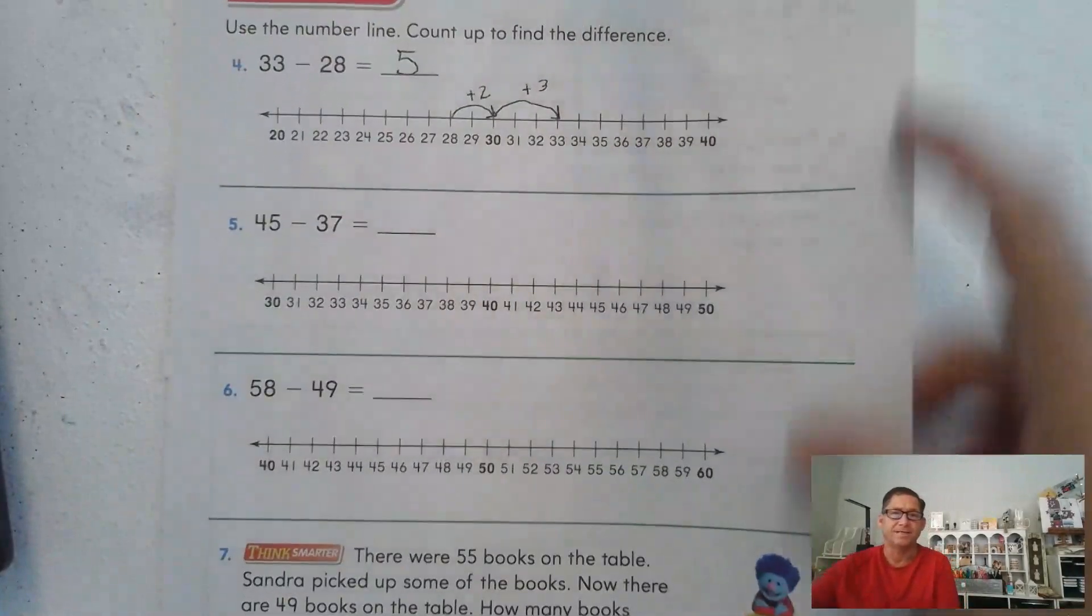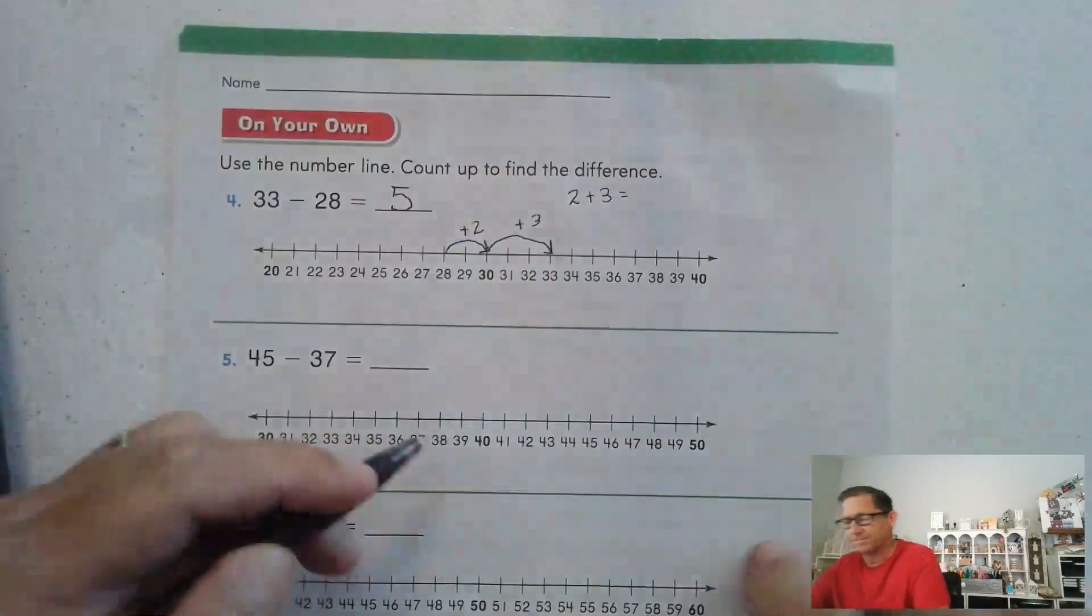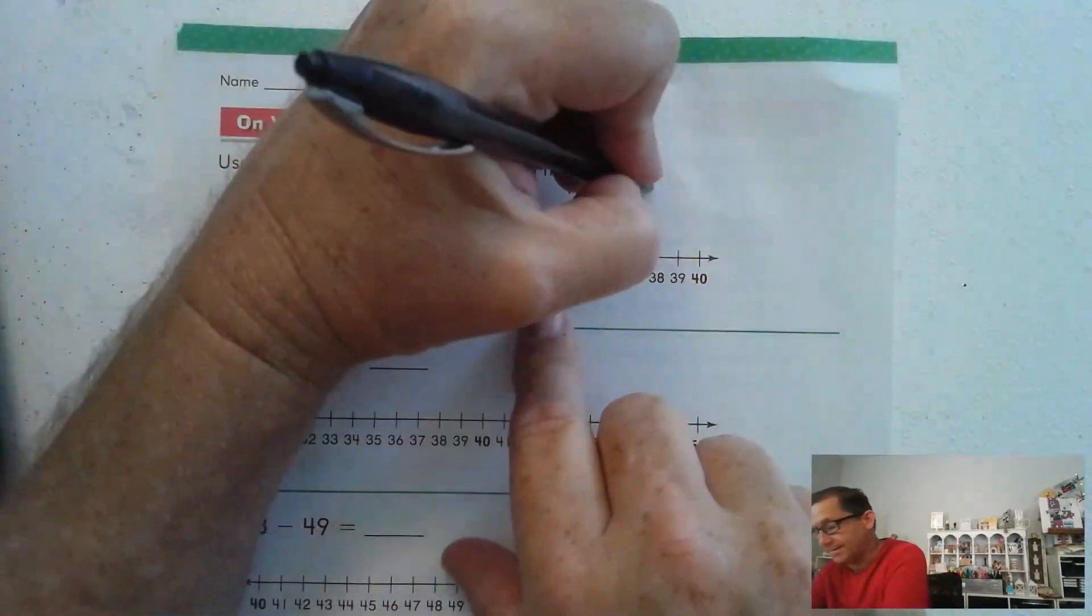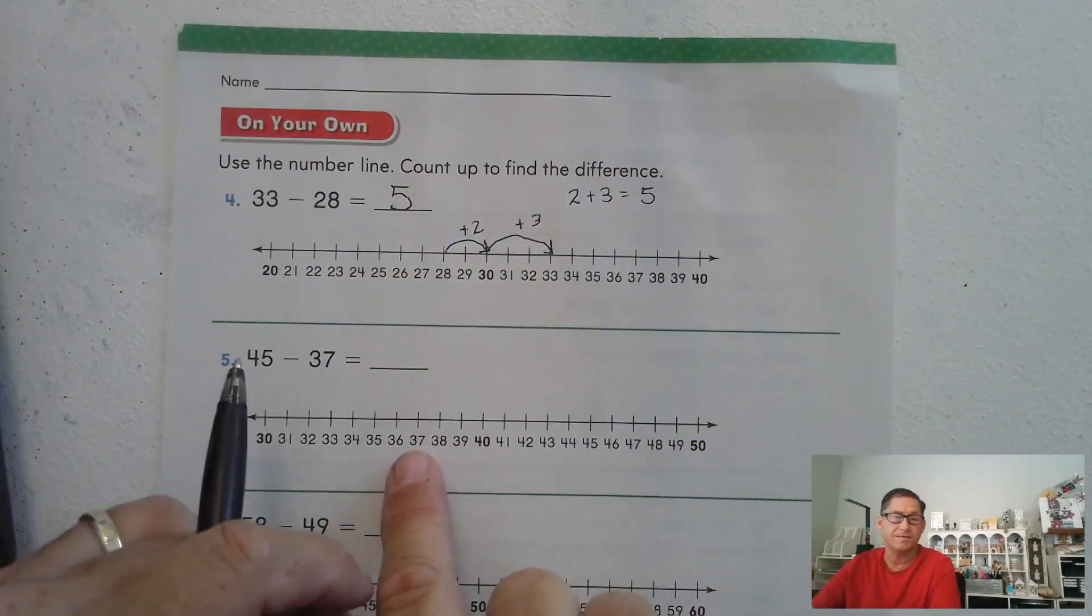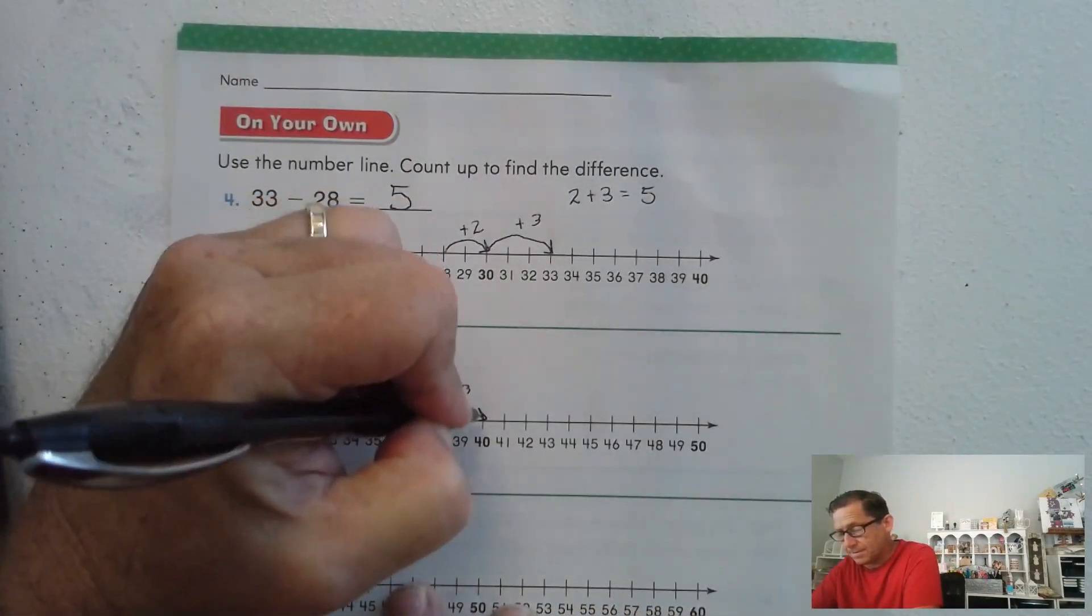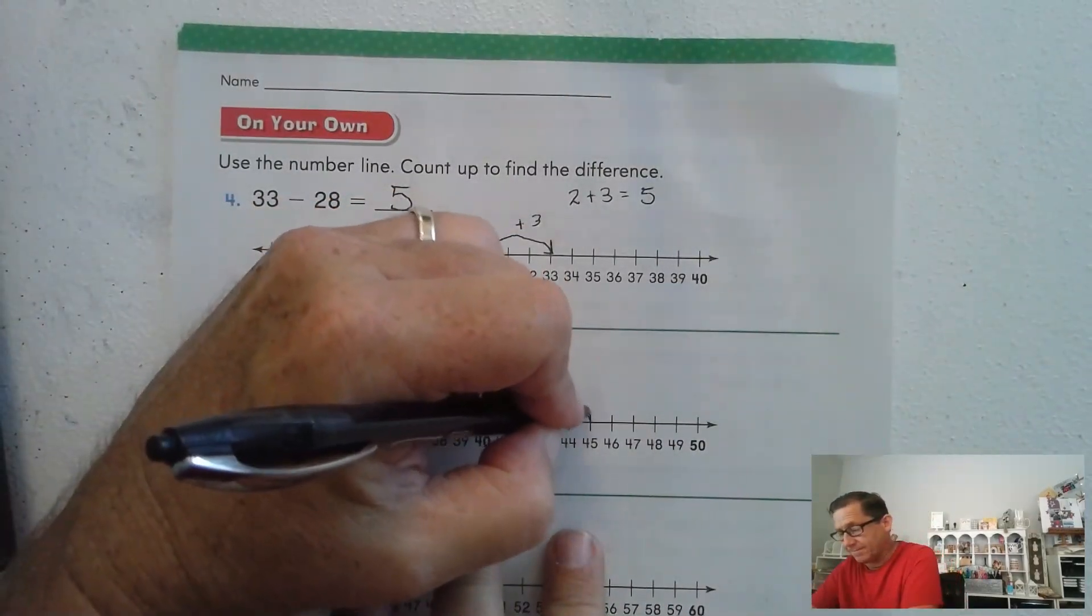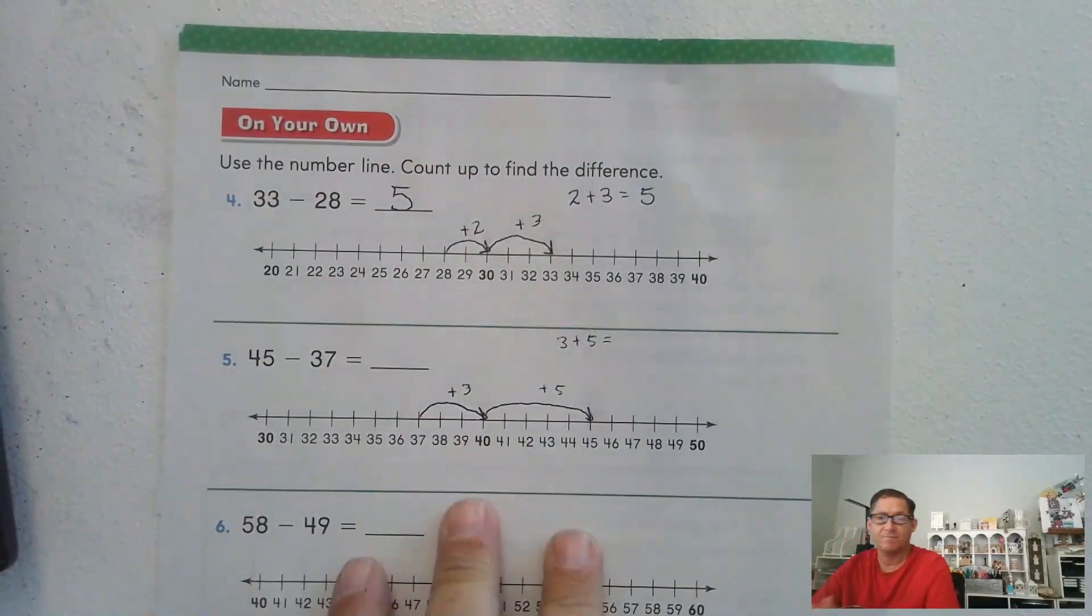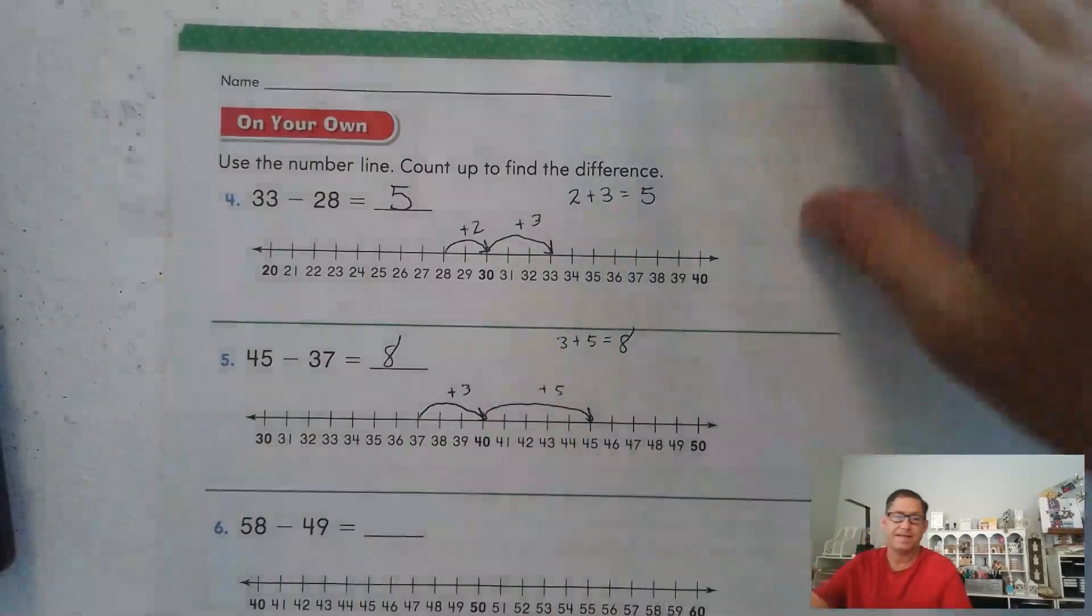45 minus 37. You know what? Let's go ahead and do this. Let's put the jumps that we do. Let's make a math problem out of it: 2 plus 3 is 5. 45 minus 37. So we're going to start at 37 and go to 40. So plus 3. And now 40 to 45. Plus 5. So we jumped 3 and we jumped 5 more. So 8. So 45 minus 37 is 8.